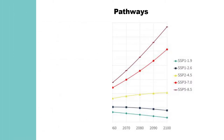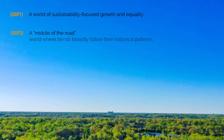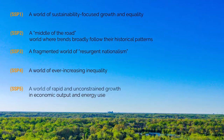The new SSPs outline five pathways the world could take: a world of sustainability-focused growth and equality, or SSP 1; a middle-of-the-road world where trends broadly follow their historical patterns, or SSP 2; a fragmented world of resurgent nationalism, or SSP 3; a world of ever-increasing inequality, or SSP 4; and a world of rapid and unconstrained growth in economic output and energy use, or SSP 5.